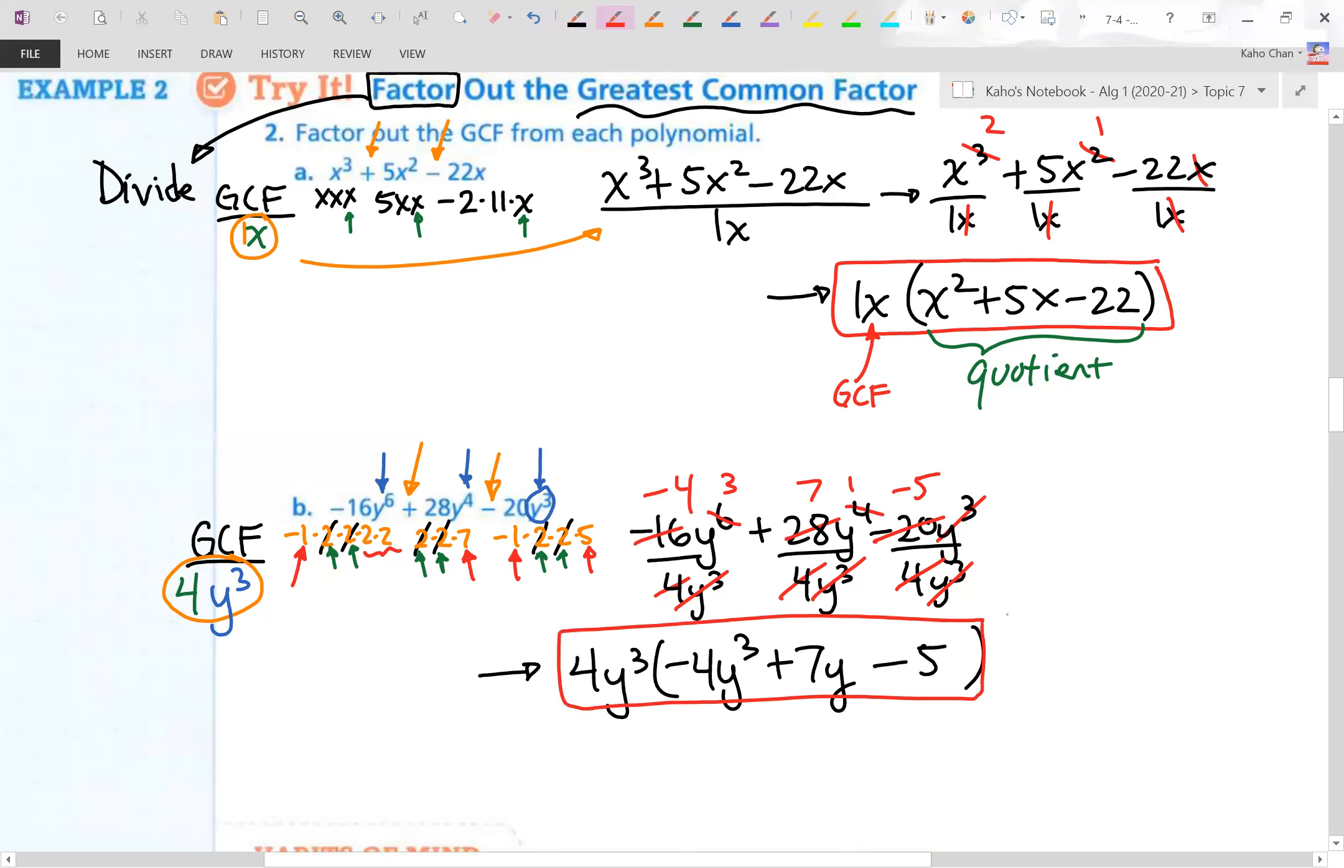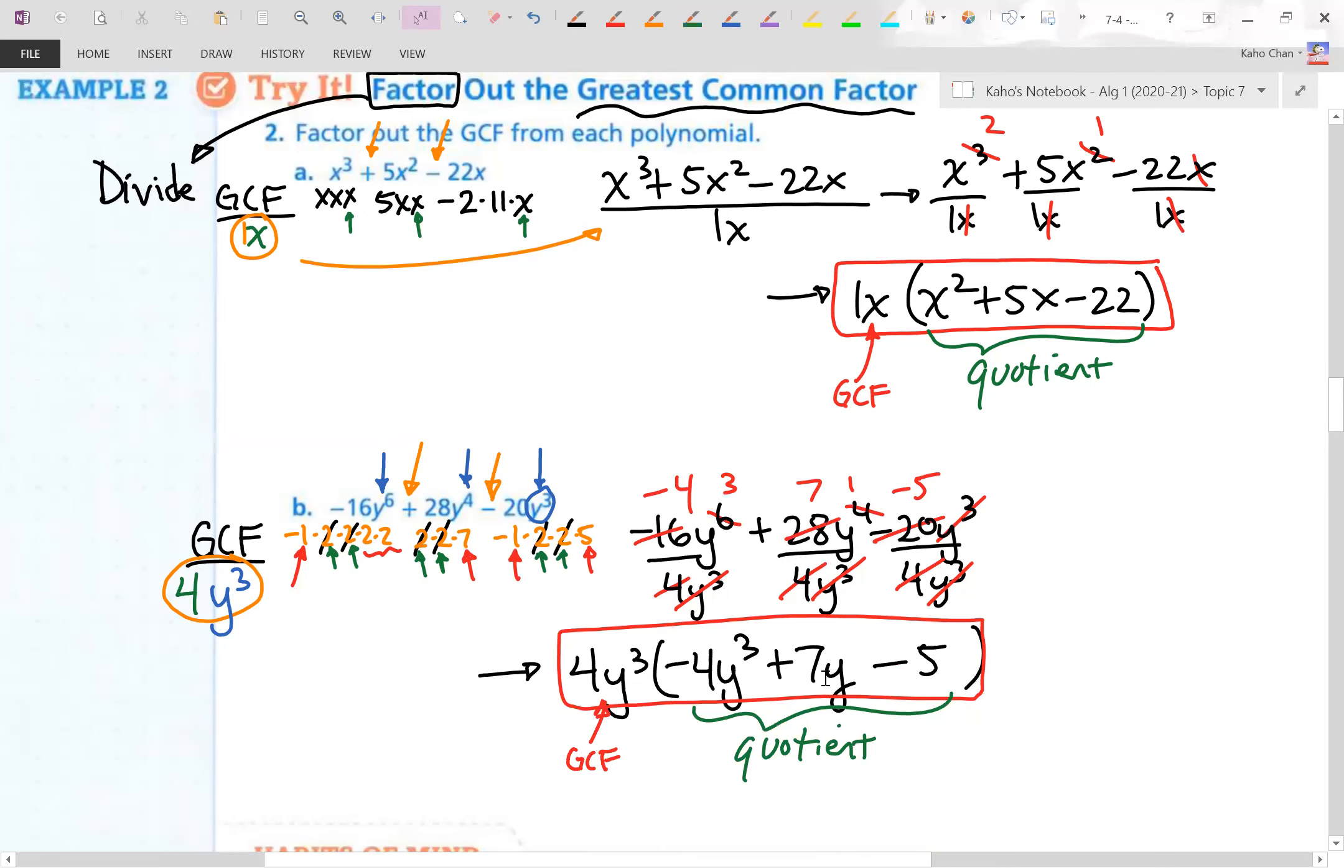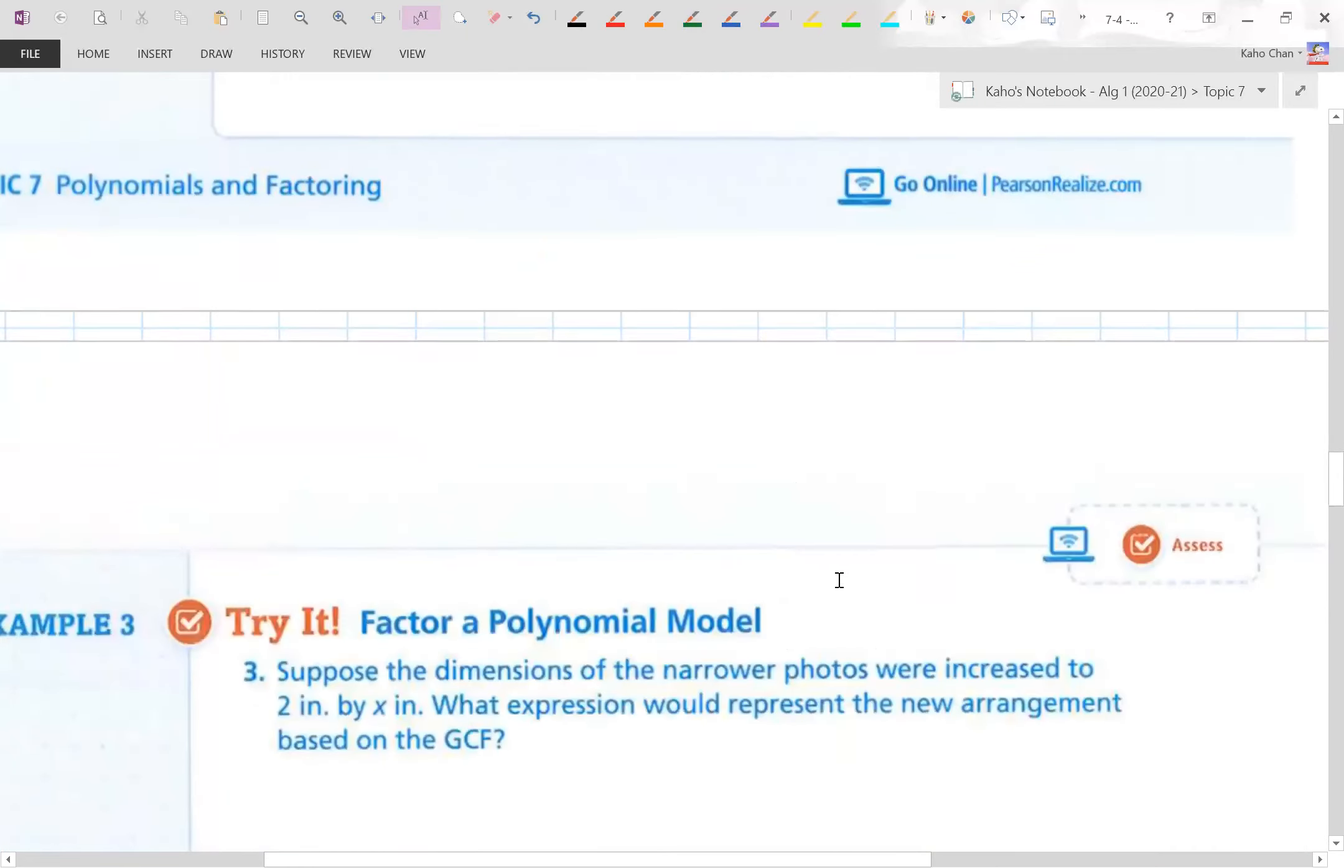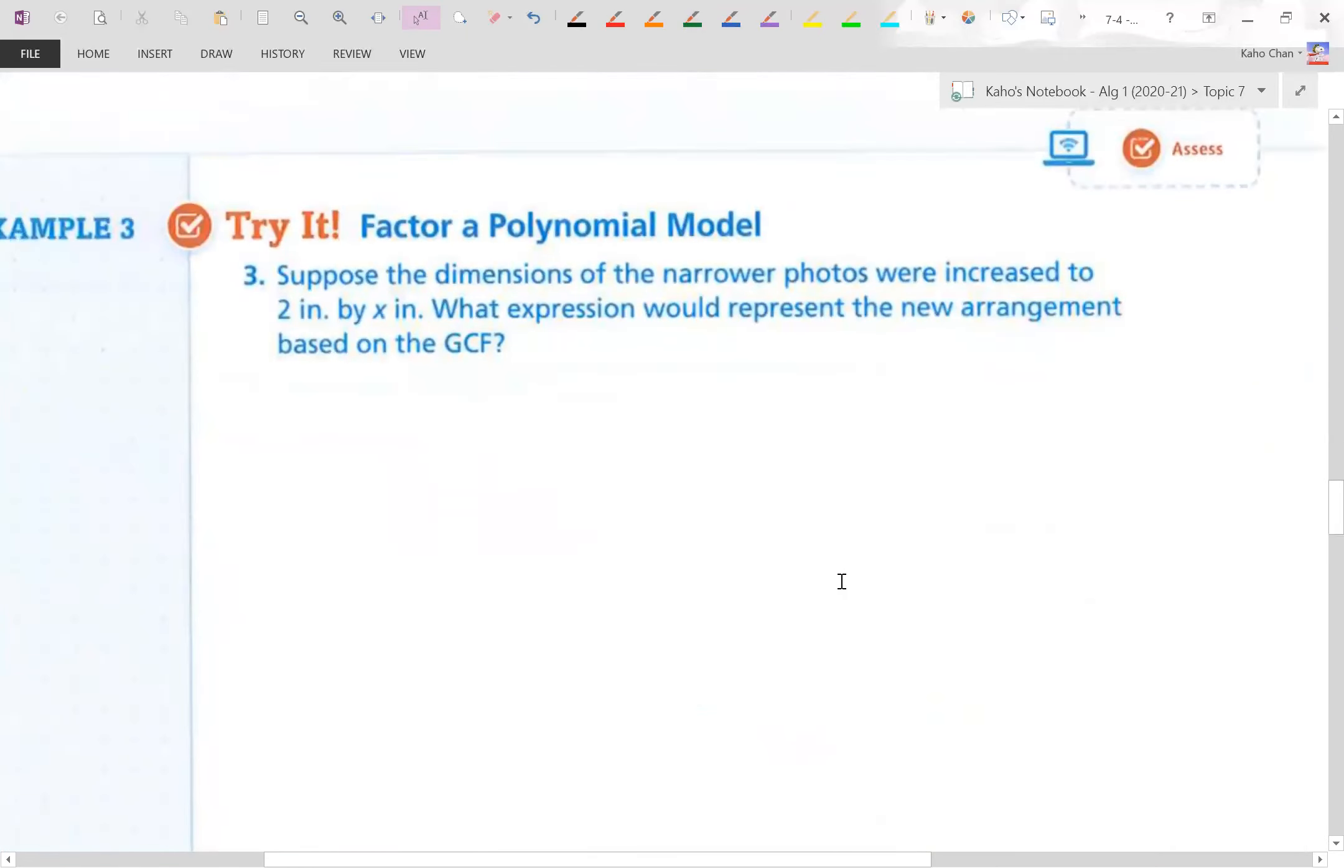Some of these steps you can skip if you start doing it in your head. And then again, we have the GCF part and of course we have the quotient part. Not bad. I'm ready for the next page. Let's do it. Good news. We are skipping example three. Ready for the last page? Let's do it.